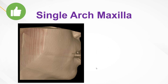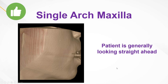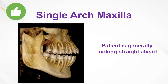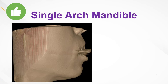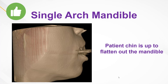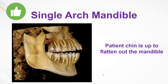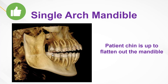If you're capturing a single arch — just the maxillary arch — the same instructions apply: the patient looks straight ahead and the maxillary arch is nice and parallel to the floor, making it more easily visualized in the 3D software for planning and diagnosis. When it comes to capturing just the mandibular arch, you'll notice the chin actually needs to be higher up. Raising the chin flattens out the mandible so it's more easily visualized in the software, just like the maxillary arch. Having the chin up translates to a flattened, well-oriented mandible in the CBCT software.